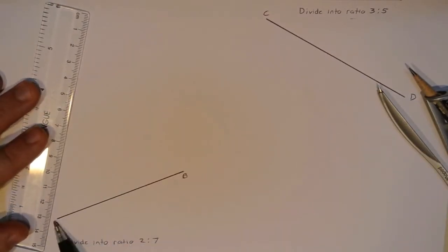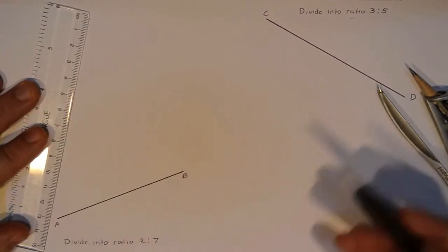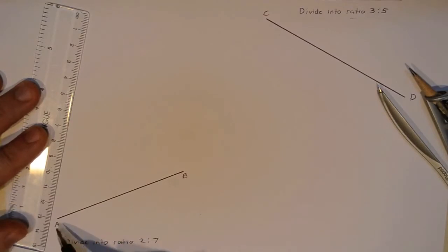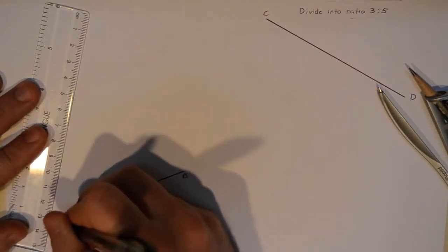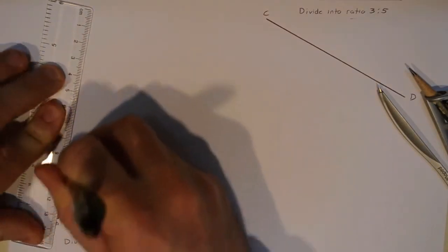So we're going to begin this construction by choosing one side or the other of the segment. It doesn't matter which. I'm right-handed, so I'm going to go for point A here. And right off of A, I'm just going to draw a line up into space.